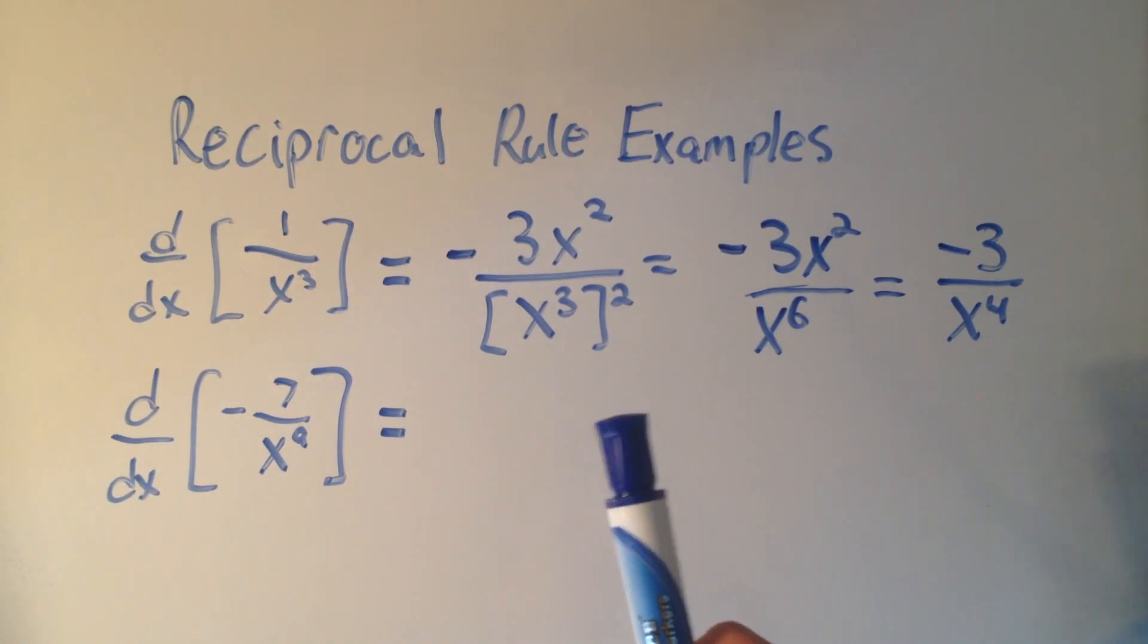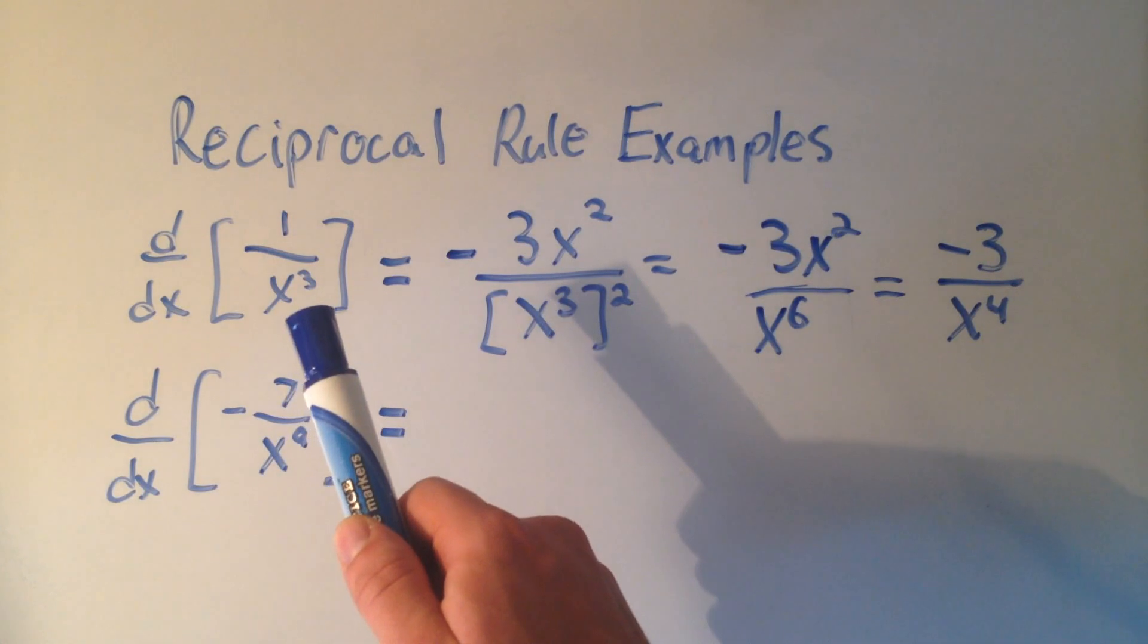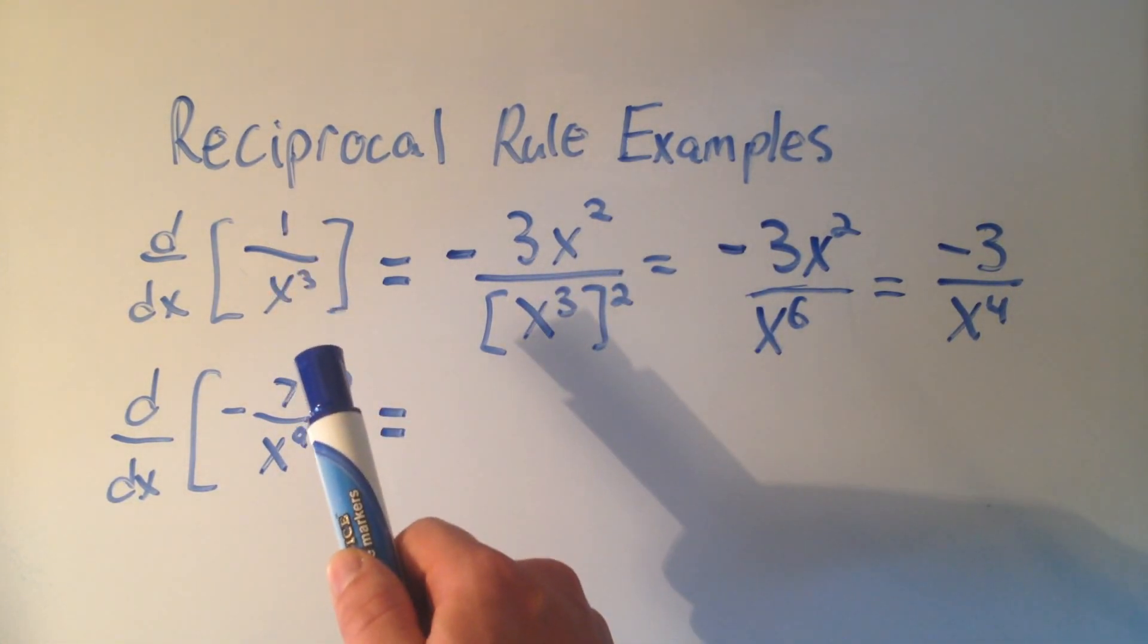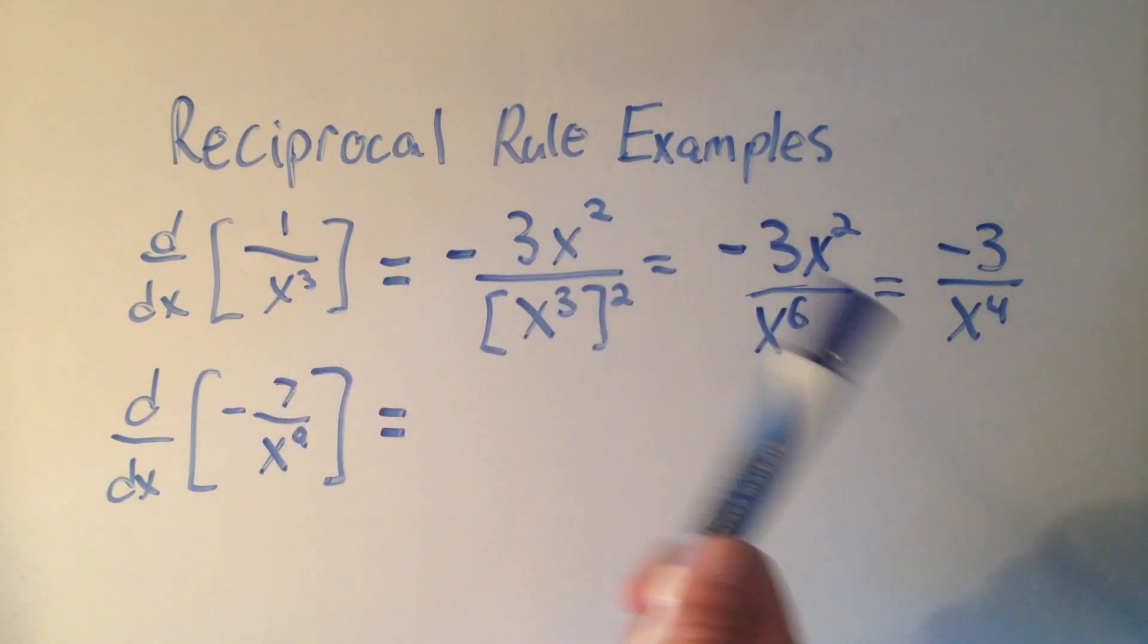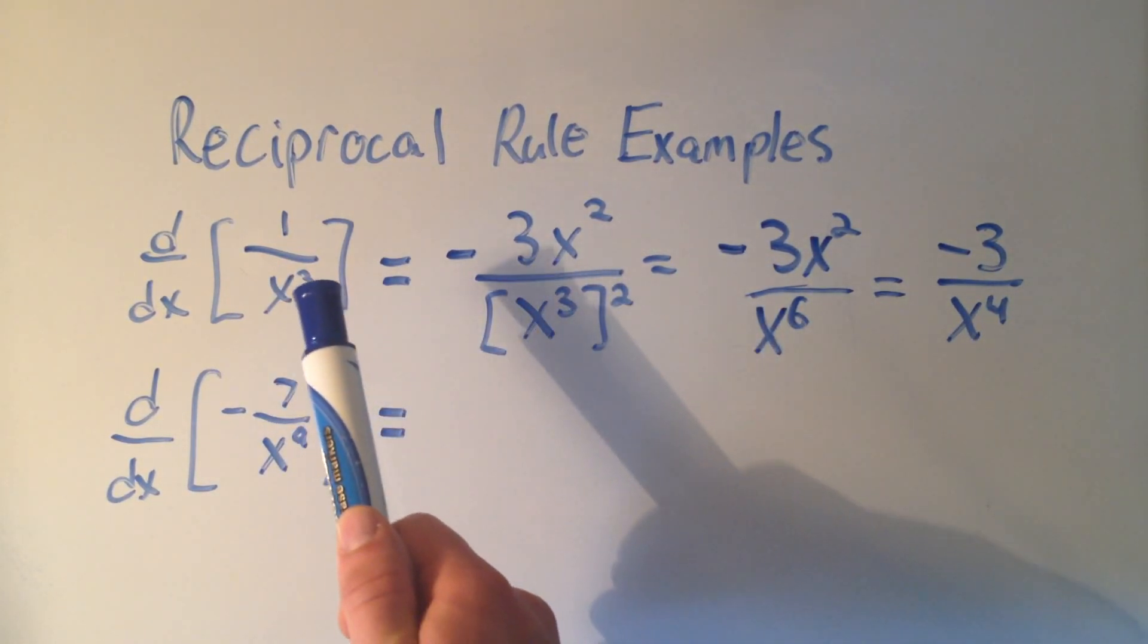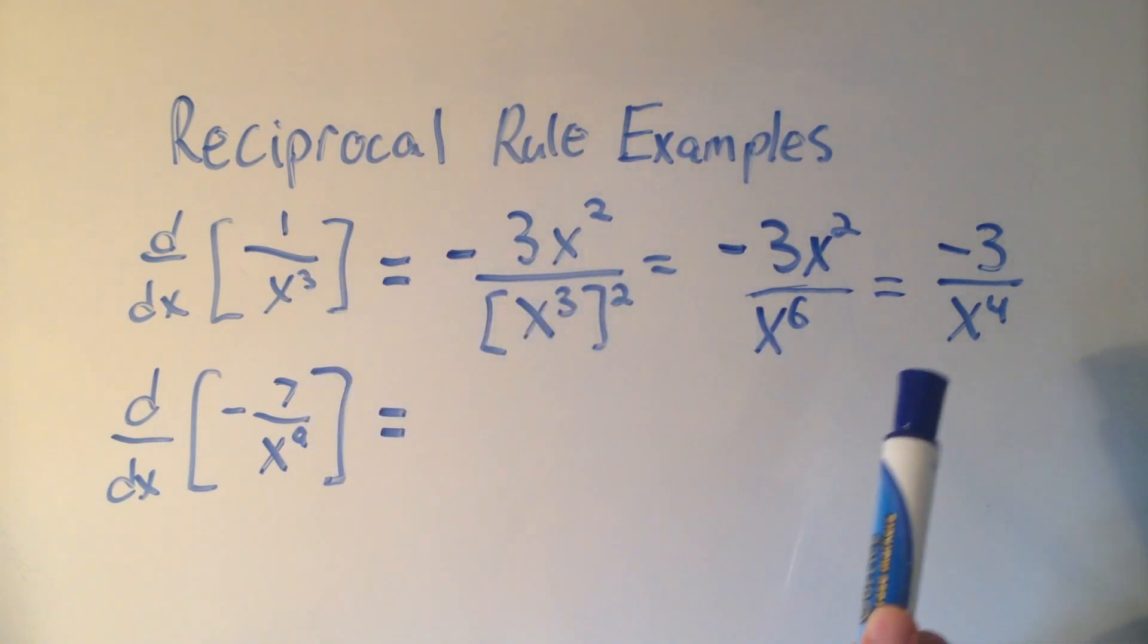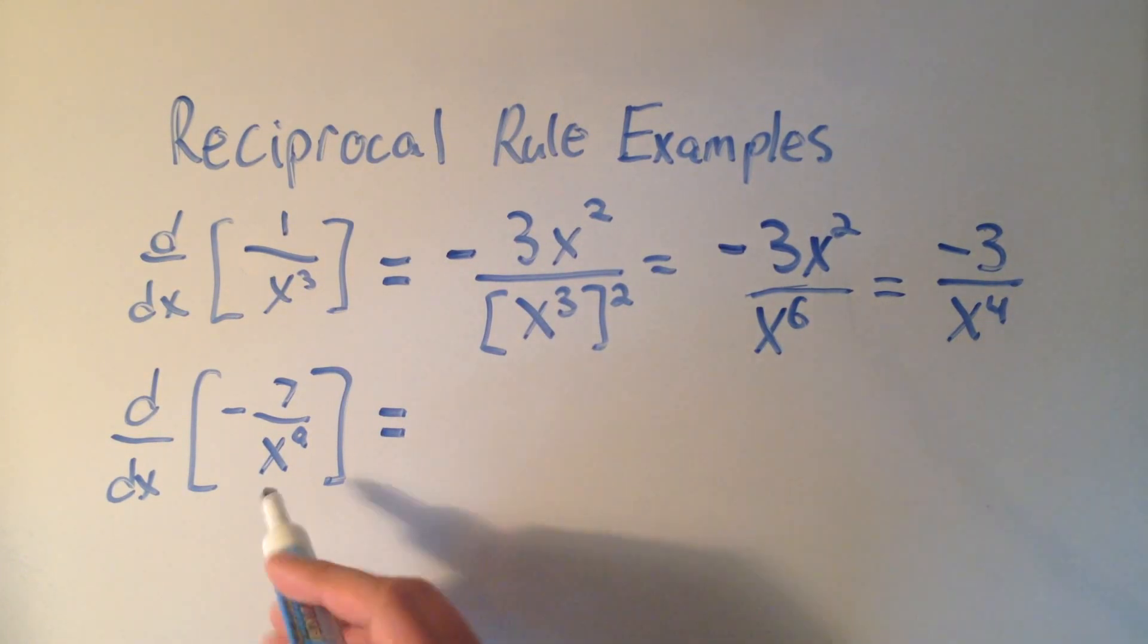So there's even kind of a shortcut inside the reciprocal rule. Do you see what I did here? If you went right from 1 over x cubed to minus 3 over x to the 4th, you see we flipped the sign, we multiplied by that 3, and then we added 1 to the power of the denominator. So if you keep that in mind,